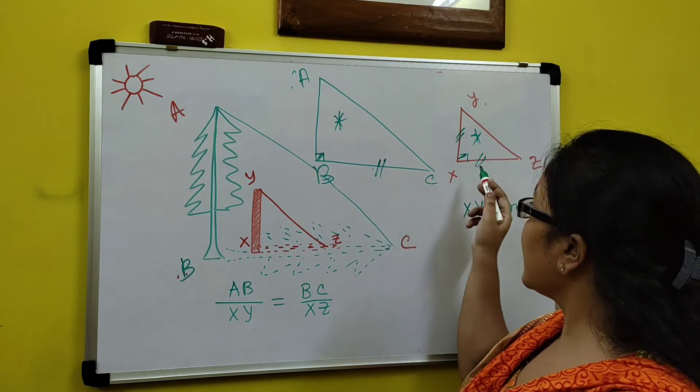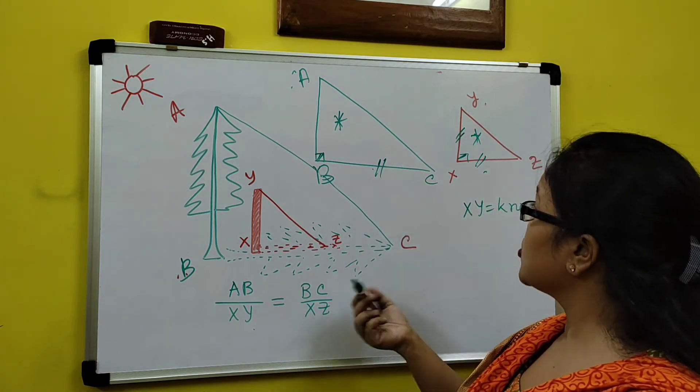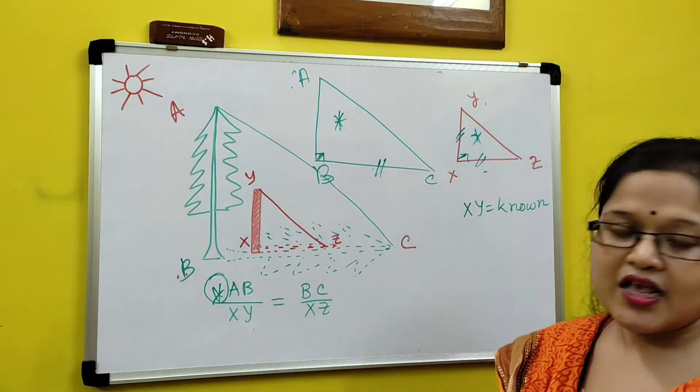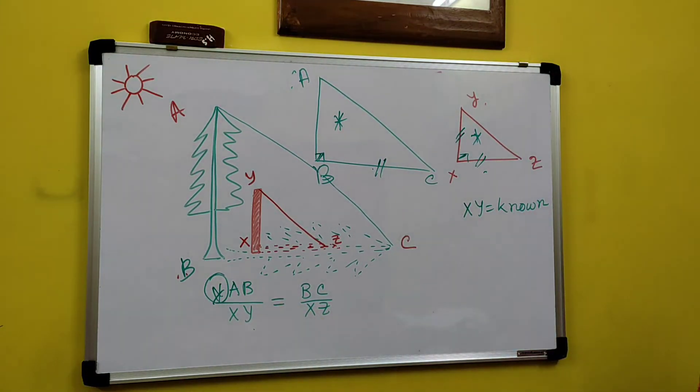So AB by XY equal to BC by XZ. Now BC we know, XZ we know, and XY obviously we know. Then we can calculate the height of tree, that is AB. Clear?